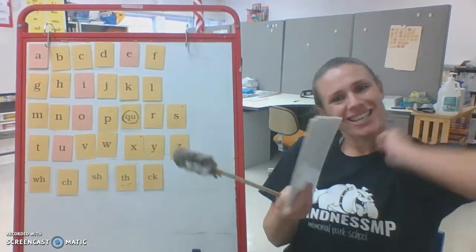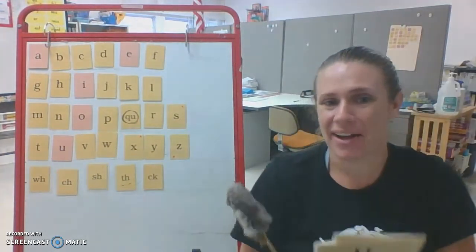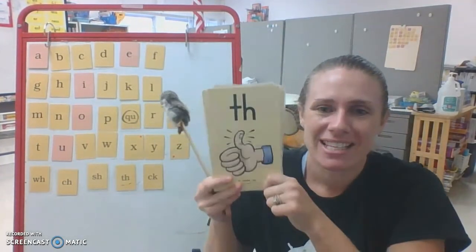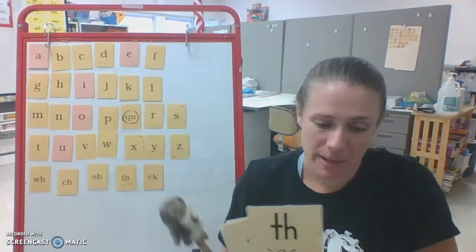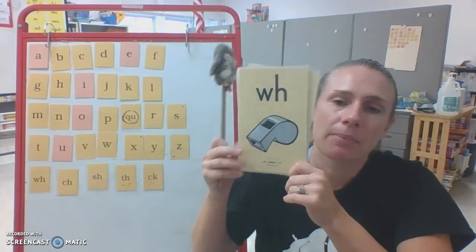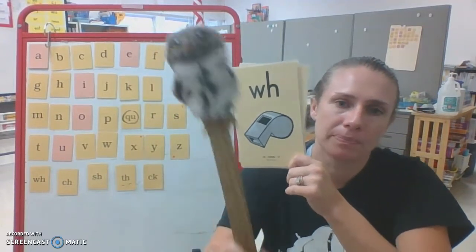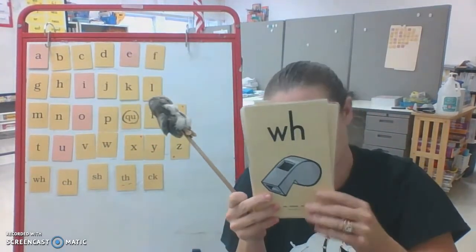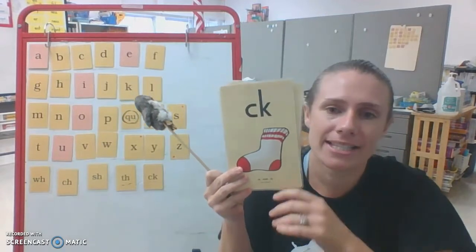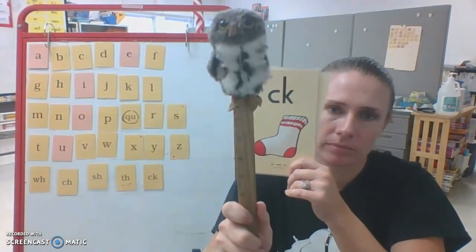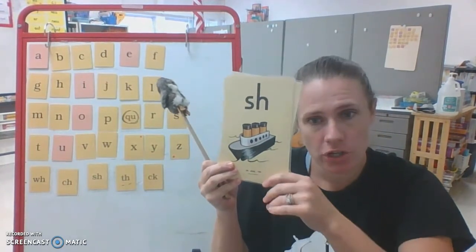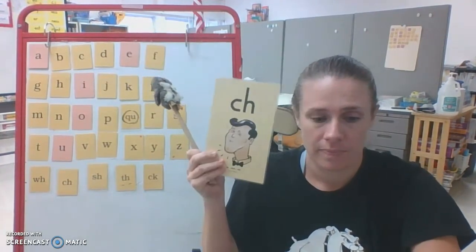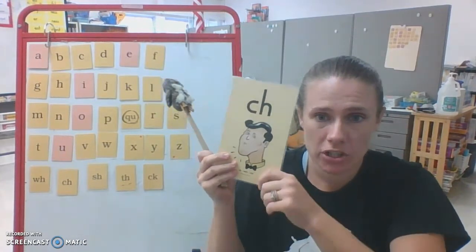We're going to keep doing these standards, these big ones, the digraphs until you know them in your sleep. When Baby Echo looks at you, repeat it loud and proud. WH, whistle, W. CK, sock, K. SH, ship, SH. CH, chin, CH.